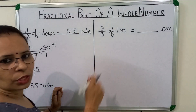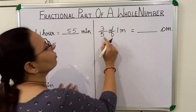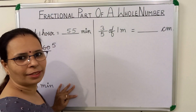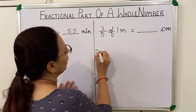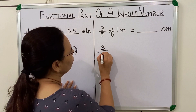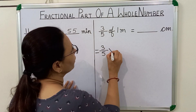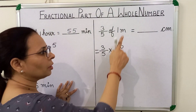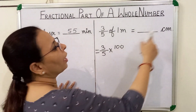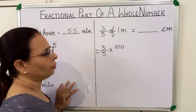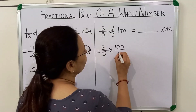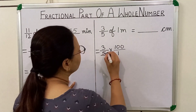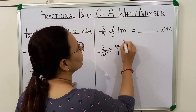Now we will see the next question. 3 fifth of 1 meter is equal to how many centimeters? We can write 3 upon 5 multiplied by 100, because 1 meter is equal to 100 centimeters and we want the answer in centimeters.